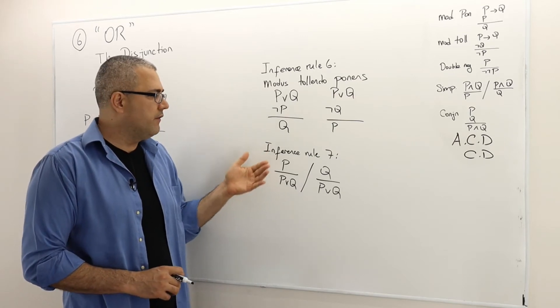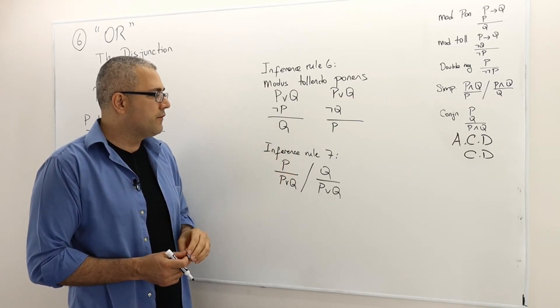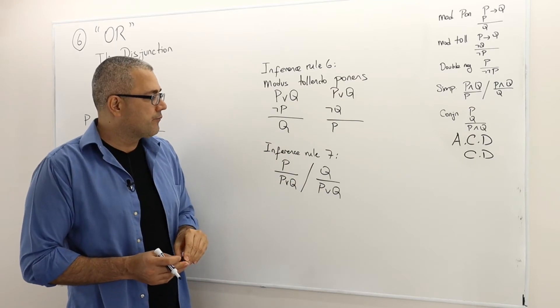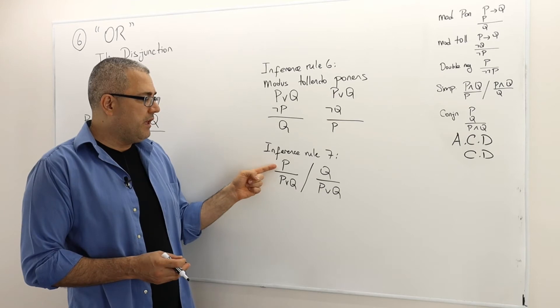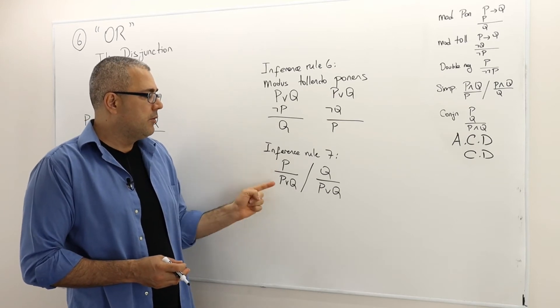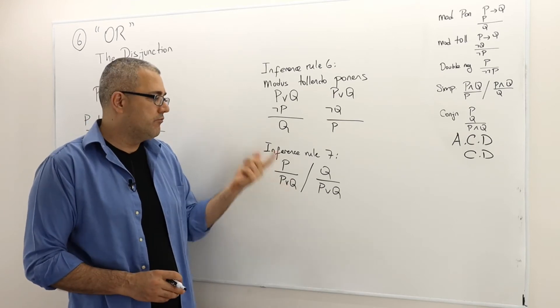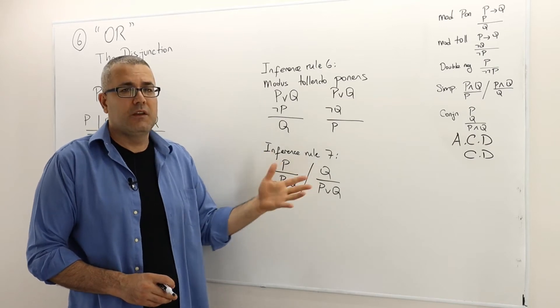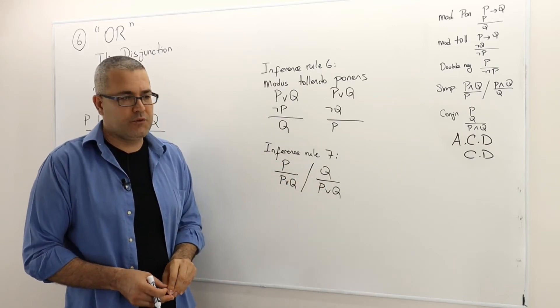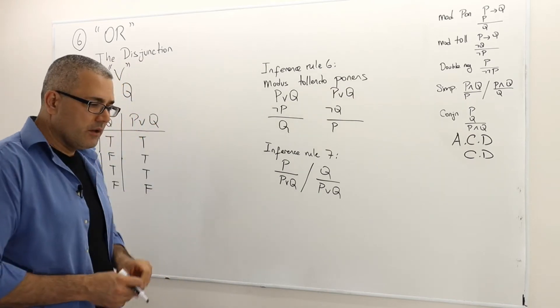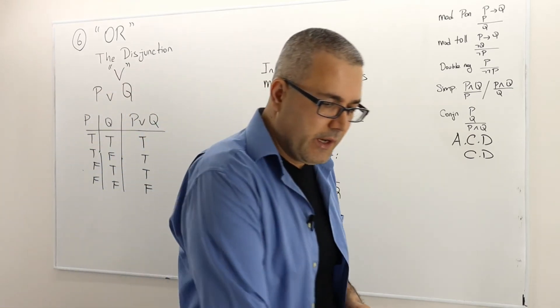Probably even more intuitive inference rule is when P is true, P or Q is also true. Or symmetrically, if Q is true, therefore P or Q is also true. Let's do an exercise.